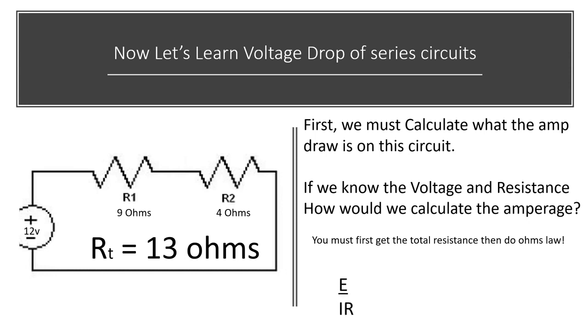So what we do is we set up our formula and plug in the knowns. In this case, we know it's a 12-volt circuit. We've got 13 ohms of resistance. All we must do now is divide 13 up into 12, and that's going to give us our amperage. In this case, it's 0.923 amps.